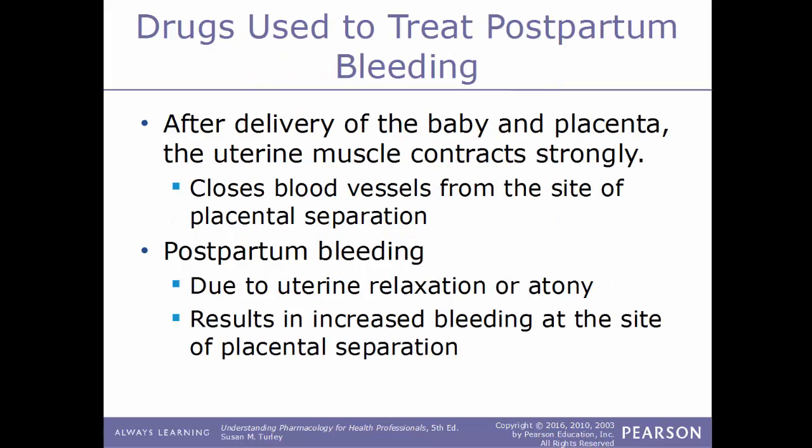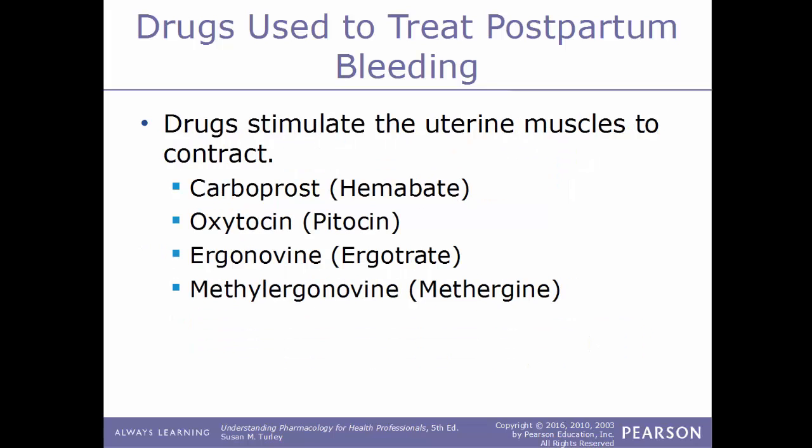After delivery of the baby and placenta, uterine muscles contract strongly to close blood vessels at the site of placental separation. Postpartum bleeding can result from uterine atony — lack of muscle tone — which increases bleeding at the placental separation site. Drugs given to treat postpartum bleeding stimulate uterine muscles to contract. Examples include carboprost (Hemabate), oxytocin (Pitocin), ergonovine (Ergotrate), and methylergonovine (Methergine).